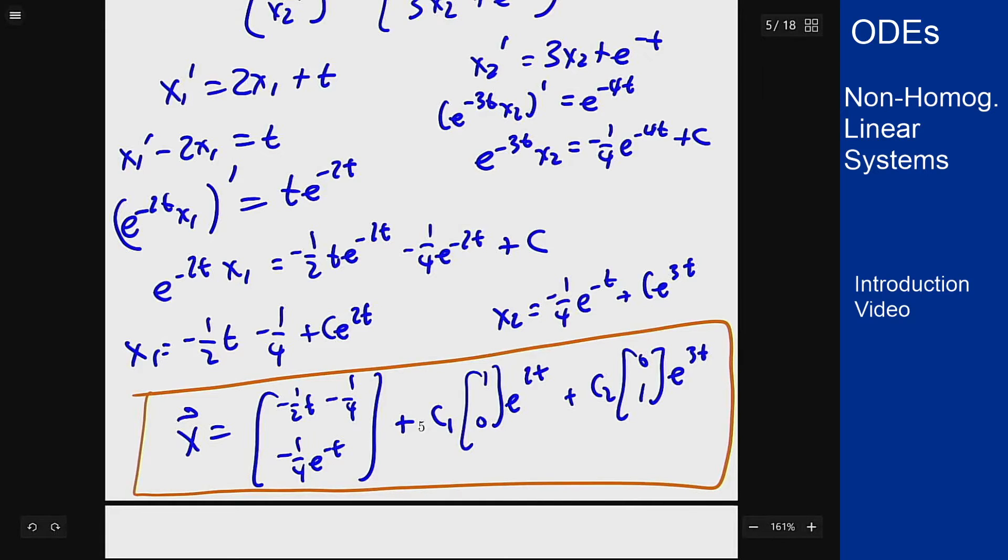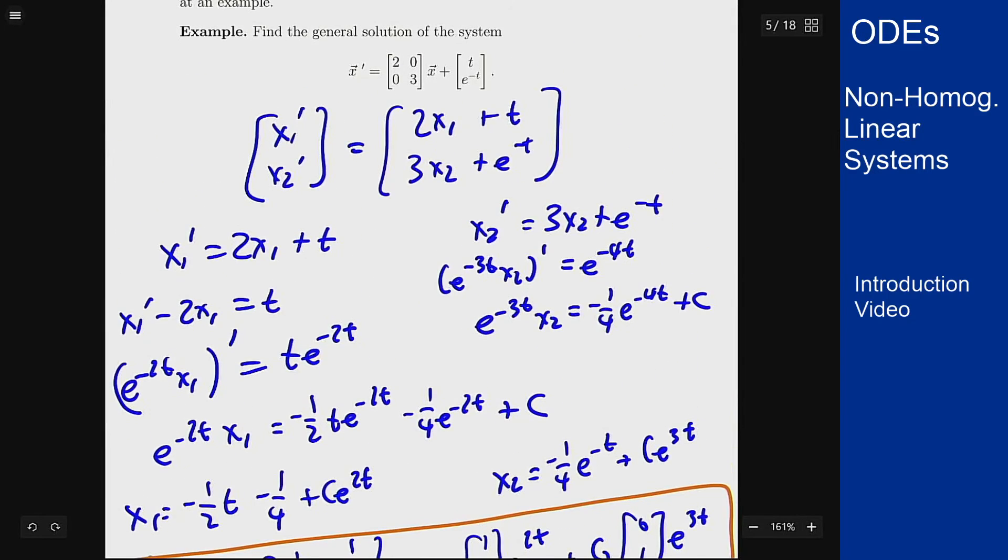Now why did this work out so great? This worked out great because this matrix here was a diagonal matrix. The only non-zero entries were on the diagonal.